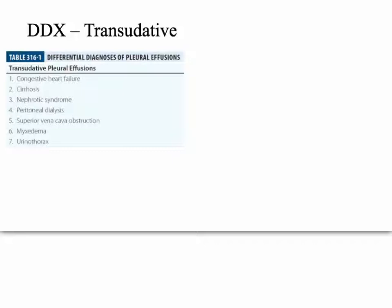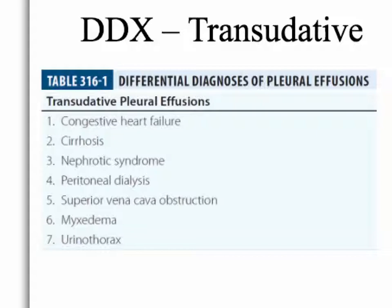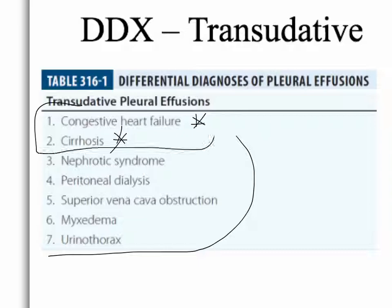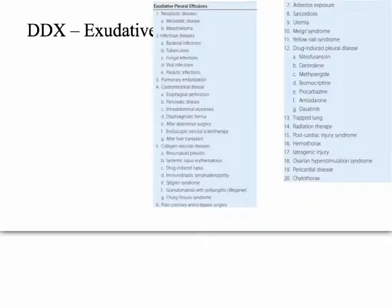The differential diagnosis for transudative is actually pretty small compared to exudative. Transudative has about seven things — the number one is congestive heart failure and number two is cirrhosis. This list is from Harrison's Internal Medicine 19th Edition. But every other source gives just the top two, so for high yield, remember those. Exudative has like 20 things, with some having 15 subclasses.